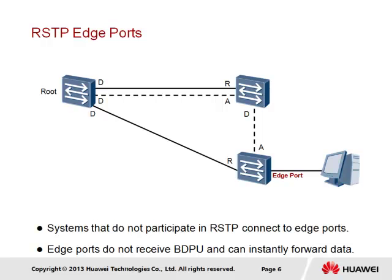In the event that the edge port happens to receive a configuration BPDU for whatever reason, the edge port will lose its status and transition to a common STP port and go through the STP convergence process. Whilst edge ports are a feature of RSTP, it is also possible to apply this feature in STP when using wireless switches.